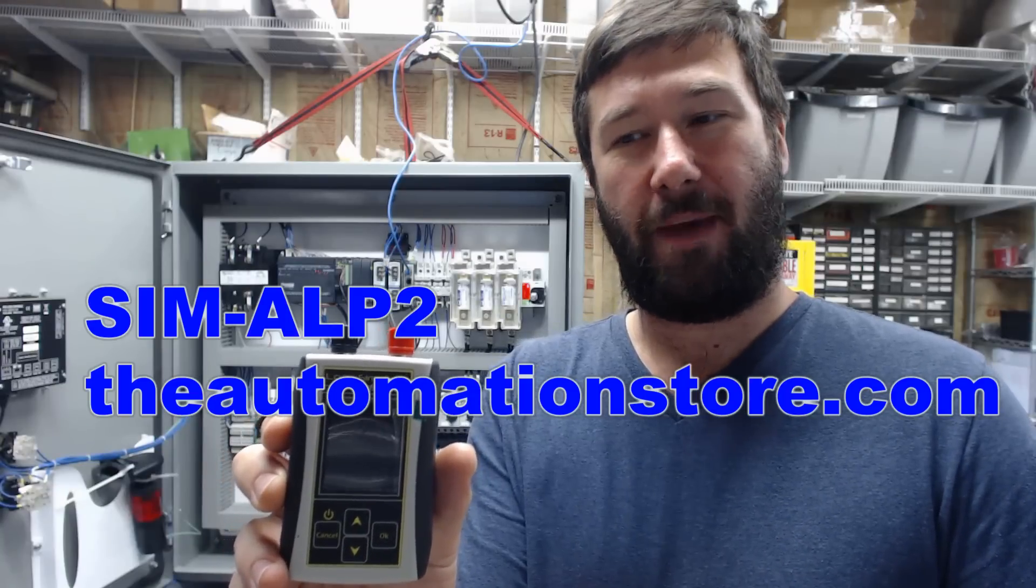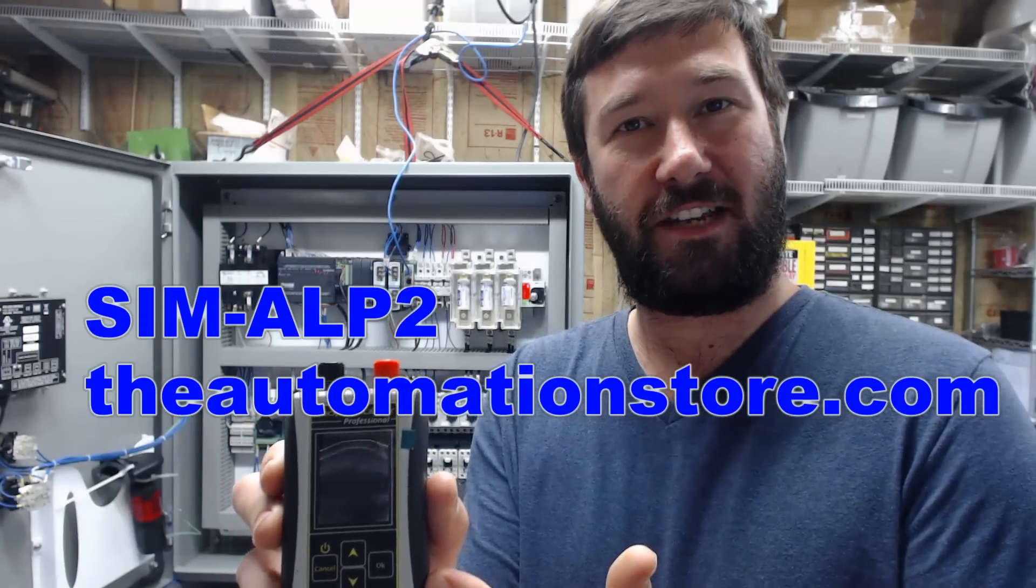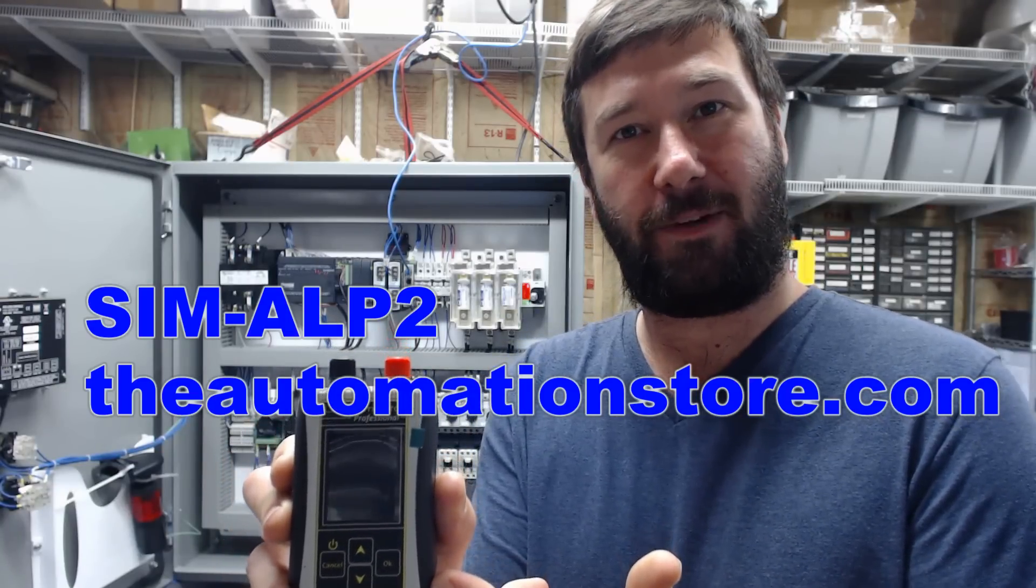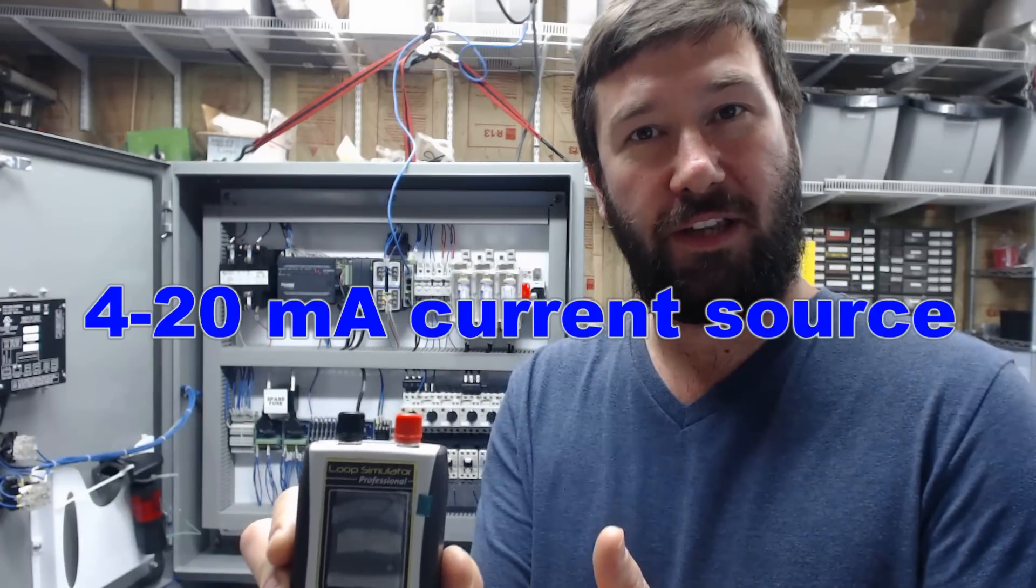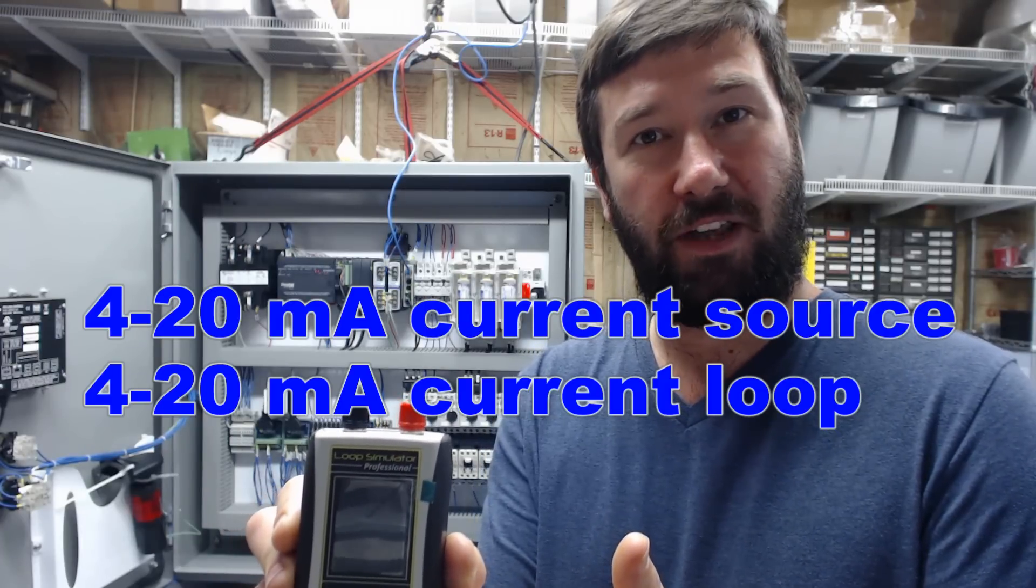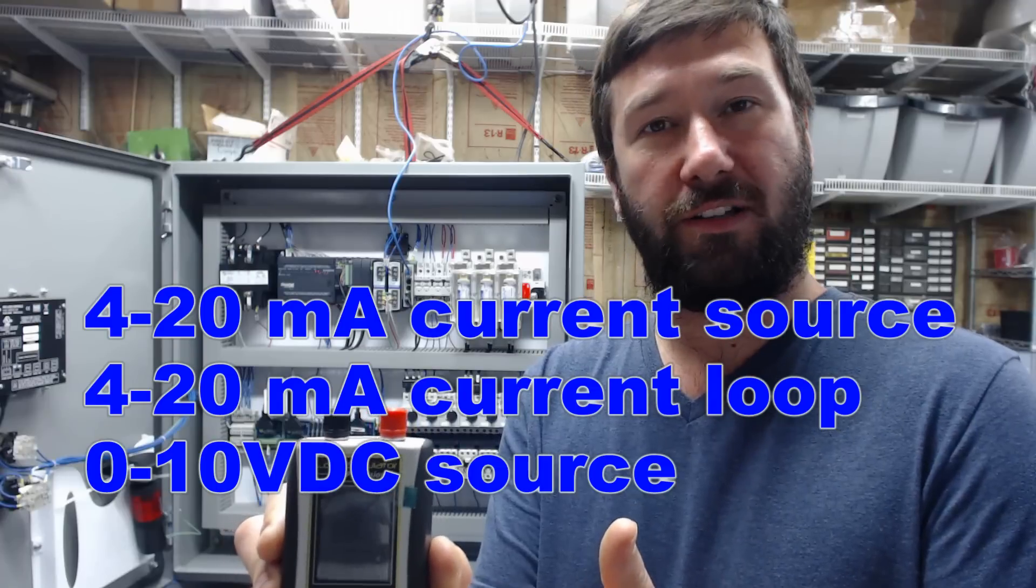Today we're going to do a demonstration with our SIM ALP2. This is a new LCD version of our popular analog simulator. It can simulate a 4 to 20 milliamp source, a 4 to 20 milliamp current loop, or a 0 to 10 volt DC signal.